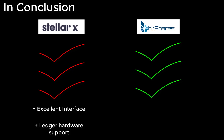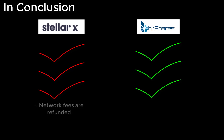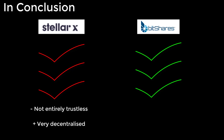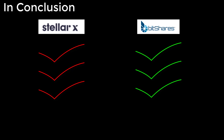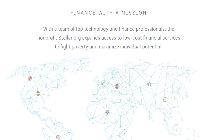In conclusion, StellarX is starting to give BitShares a run for its money. Almost everything we just went through has been possible on BitShares for years, but without an interface as good as this and without hardware wallet support. StellarX is also free and refunds all Stellar network fees, so it really is free. The only fees you might incur are those charged by third-party issuers. It's not entirely trustless because of those third-party issuers, but it is very decentralized. Transfers happen at the Stellar protocol level, meaning there are no smart contracts that can break. Above all else, StellarX is perfectly congruent with the Stellar network's mission: to expand access to low-cost financial services to fight poverty and maximize individual potential. In my personal view, StellarX is doing a stellar job.